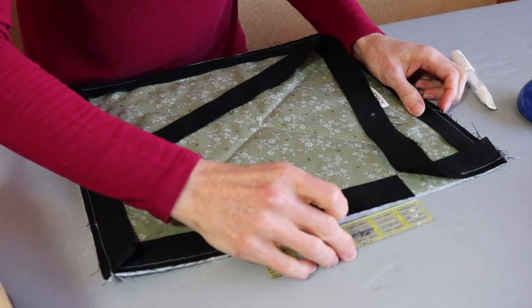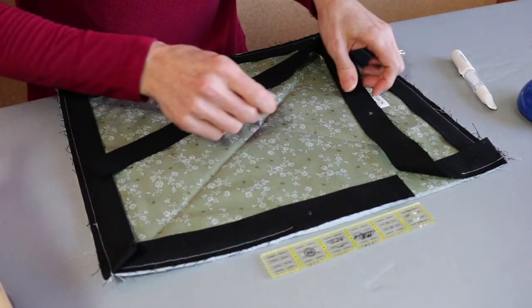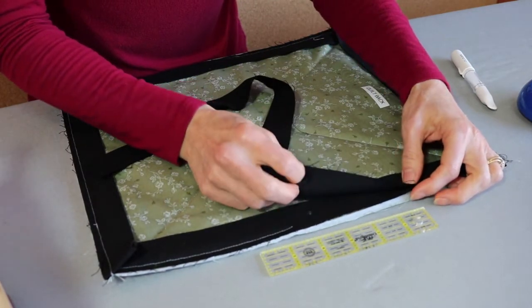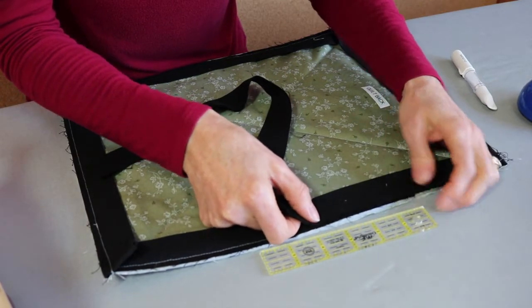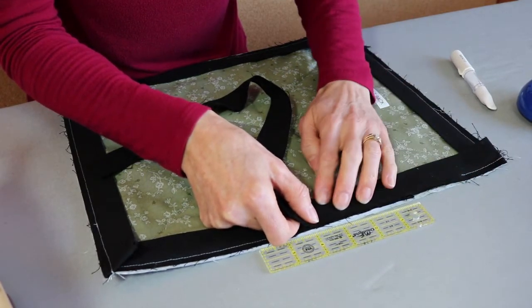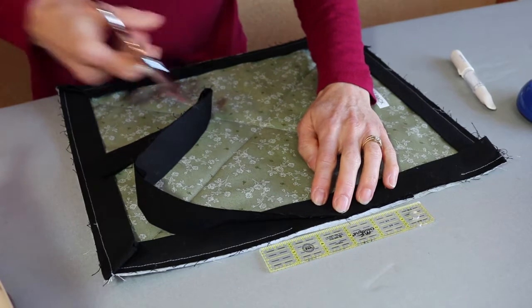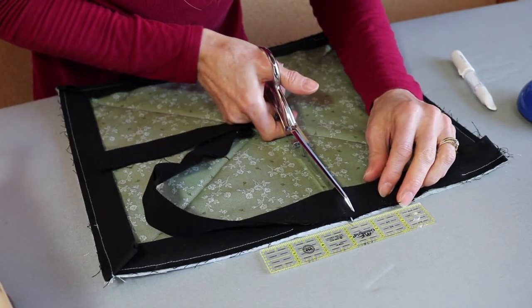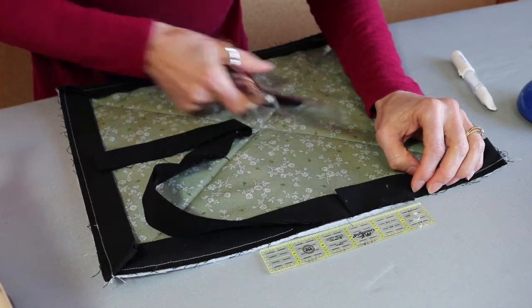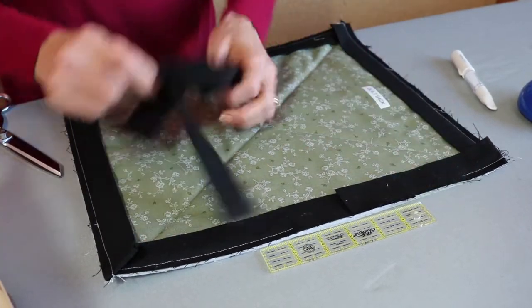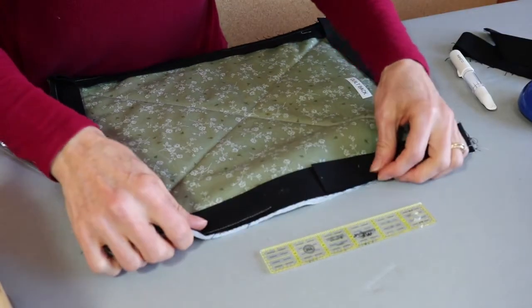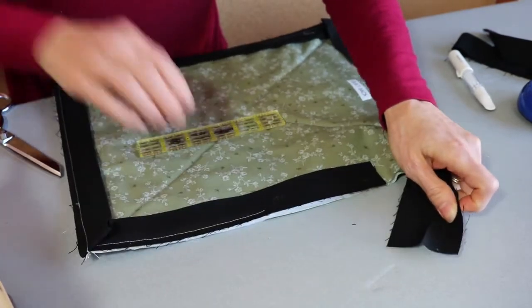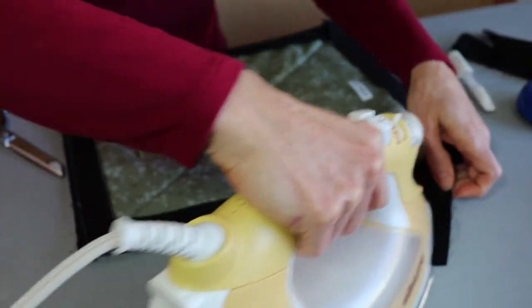We are going to measure two and a half inch overlap between the tails of the binding and it could be just over two and a half if you'd like. It helps me to iron my binding flat again to do the join.